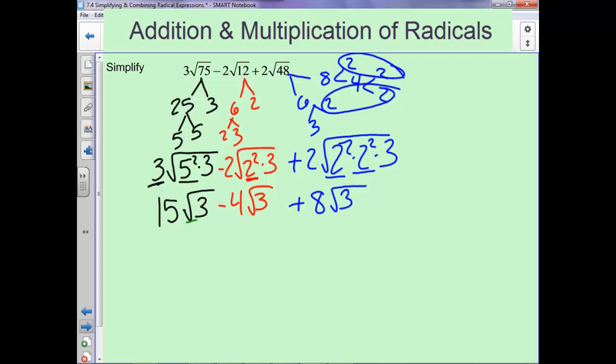And now notice all of them have square root of 3, so we can add and subtract or combine our coefficients. So 15 minus 4 is 11, 11 plus 8 is 19, root 3.